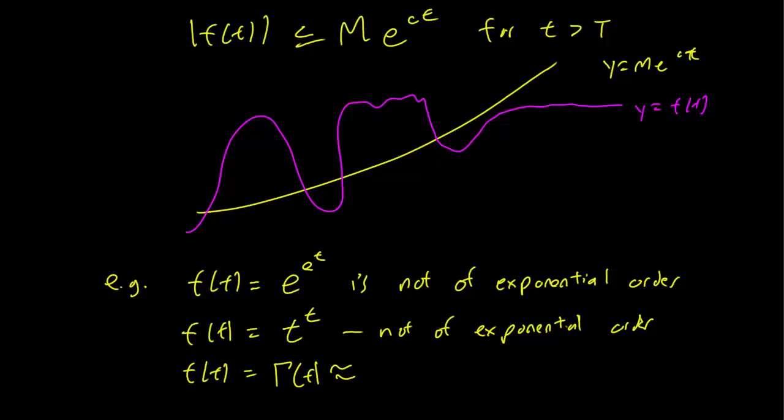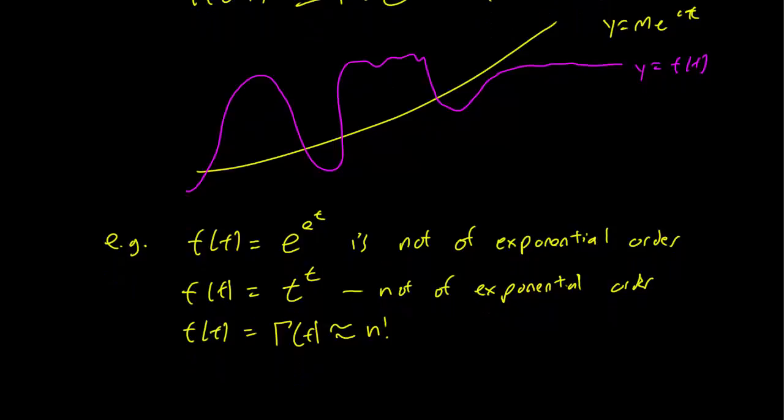And the reason is the gamma function is related to the factorial. And I'm sure you've seen many examples in the past of how factorials really grow crazy, crazy fast. So these are some examples of simple functions that are not of exponential order. But in general, everything you're familiar with is going to be of exponential order. Polynomial functions are going to be of exponential order. Exponential functions are obviously of exponential order. Sine and cosine functions are of exponential order, and so on.